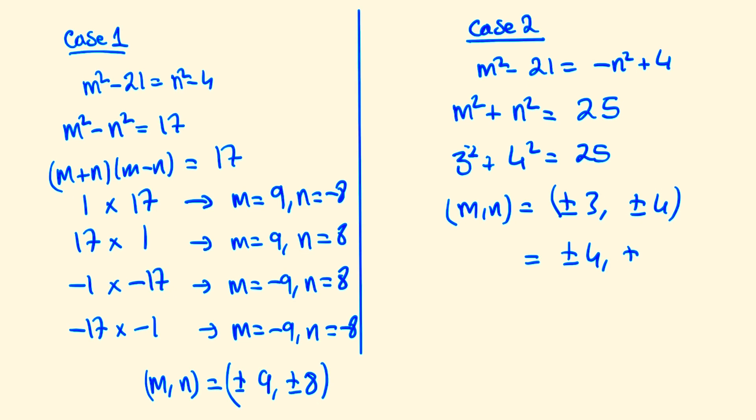Equally though, we could have m = 0 and n = ±5, and vice versa would mean that m = ±5 and n = 0.